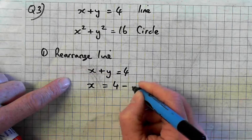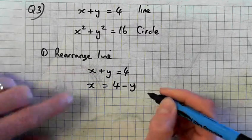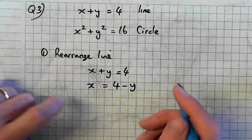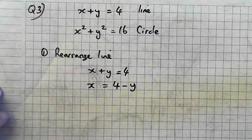So move the plus y across and it becomes minus y. Now have we got either x or y on its own? We do. So that's it rearranged. That's all you have to do.